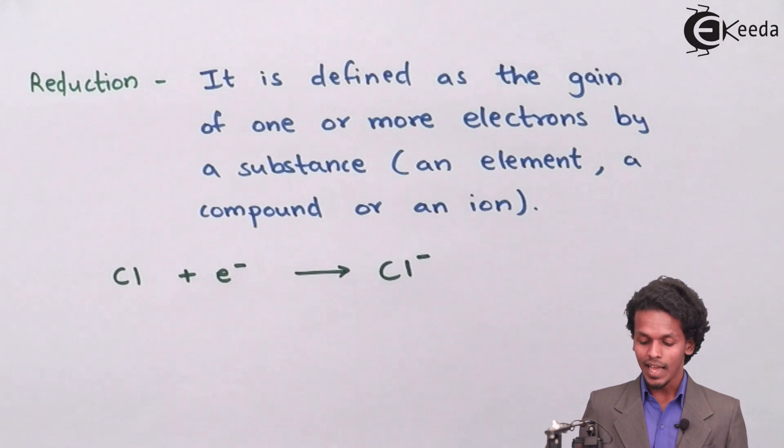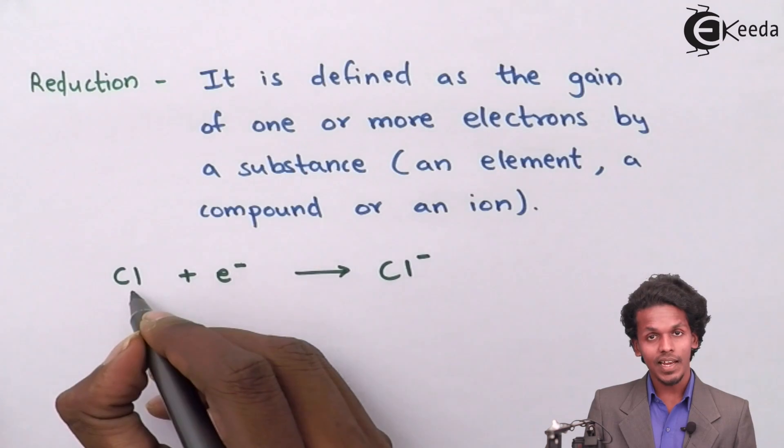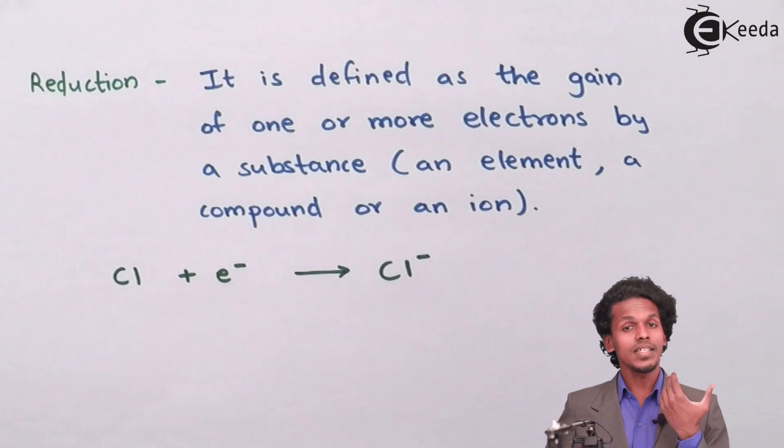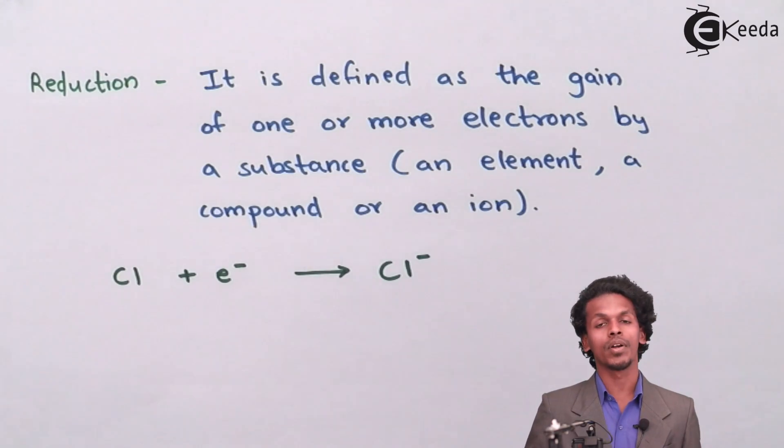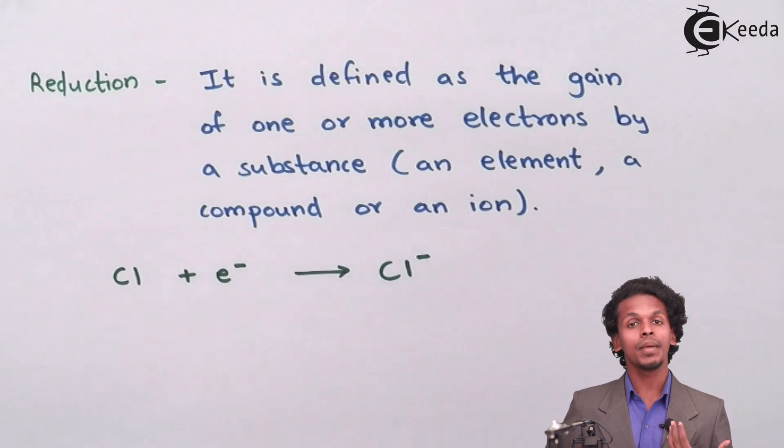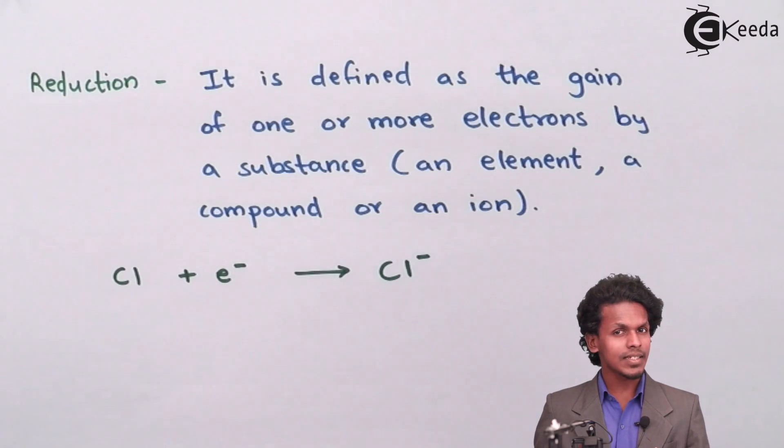So in this case, I am converting a Cl atom into a Cl minus ion. This is only possible if an element, ion, or compound accepts an electron, and this electron can be more than one. For this instance, let me give you another example.